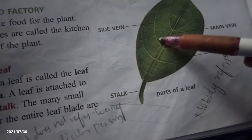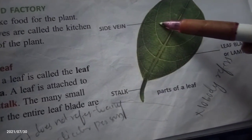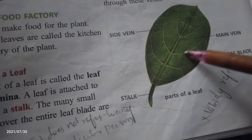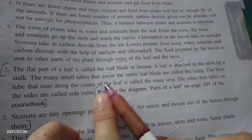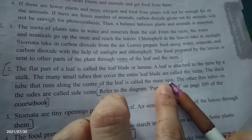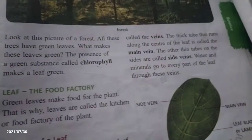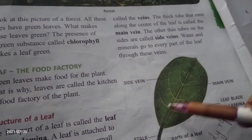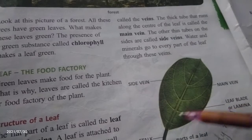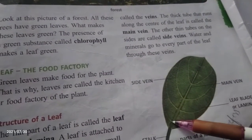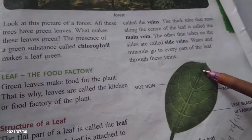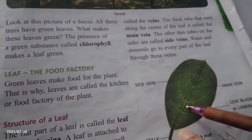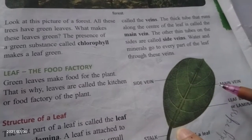You can see the larger veins and also the smaller tube-like structures on the leaf. This tube-like structure is nothing but veins. The thick tubule that runs along the entire length of the leaf is called the main vein. There are many veins here, and the one which runs along the full length of the leaf — the longest vein — is nothing but the main vein.